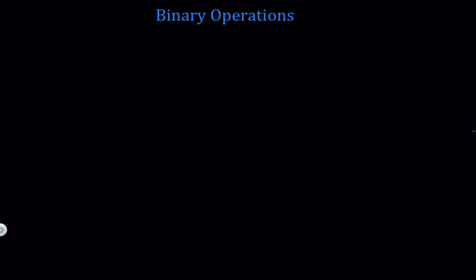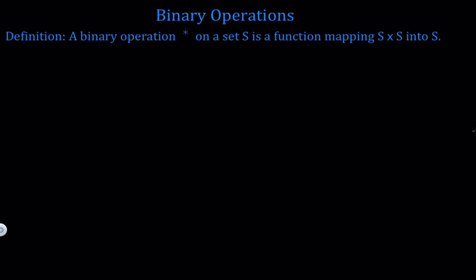Hi, in this video we're going to talk about binary operations. Let's look at a definition. A binary operation, denoted star, on a set S is a function mapping S cross S into S. This may seem a little bit wordy and hard to understand at first, but actually you've been using binary operations most of your life without even knowing it.